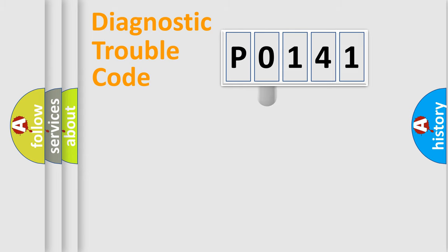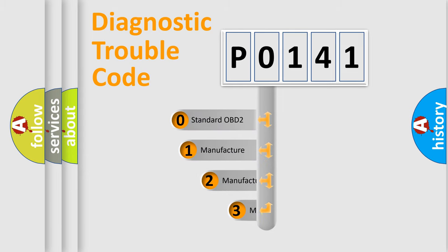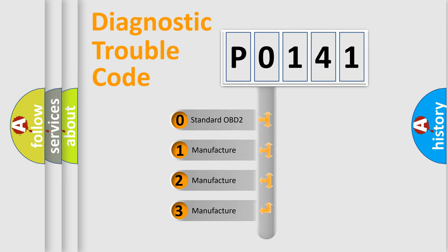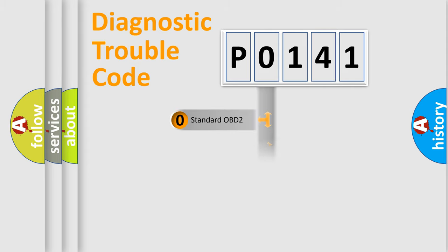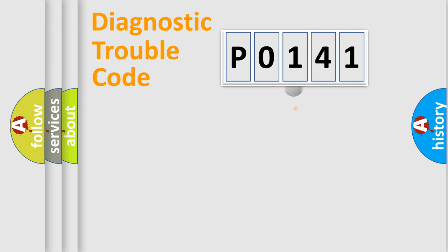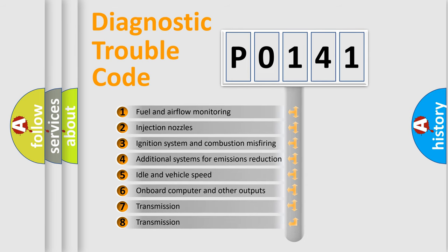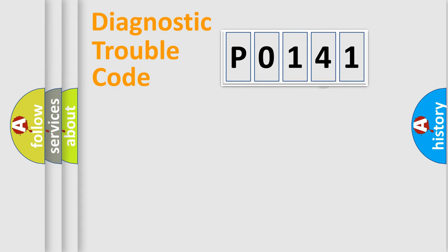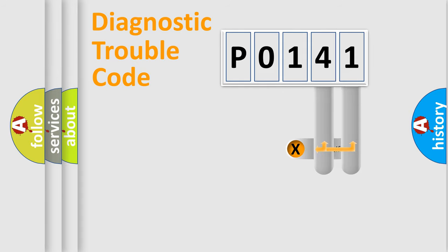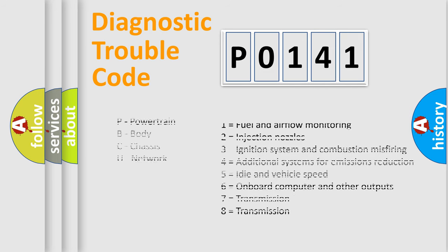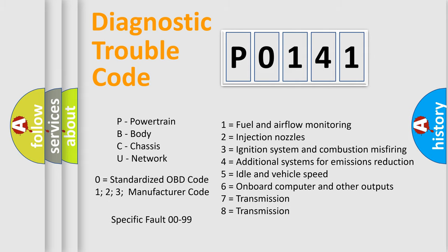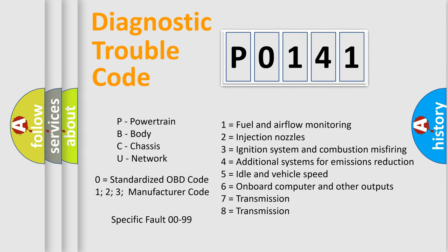This distribution is defined in the first character of the code. If the second character is expressed as zero, it is a standardized error. In the case of numbers 1, 2, or 3, it is a more specific expression of a car-specific error. The third character specifies a subset of errors. The distribution shown is valid only for the standardized DTC code. Only the last two characters define the specific fault of the group. This division is valid only if the second character code is expressed by the number zero.